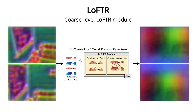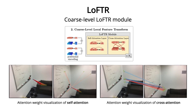Next, the coarse feature maps from the local feature CNN are flattened to one dimension and combined with positional encodings. A transformer module, which contains interleaved self- and cross-attention layers, is used to process and transform the coarse-level local features multiple times. Intuitively, the self- and cross-attention layers have global receptive fields that can aggregate relevant information from the entire image, either from itself or from the other image. These visualizations demonstrate that the query points in the textureless region can look beyond the local surroundings and attend to regions with rich textures.